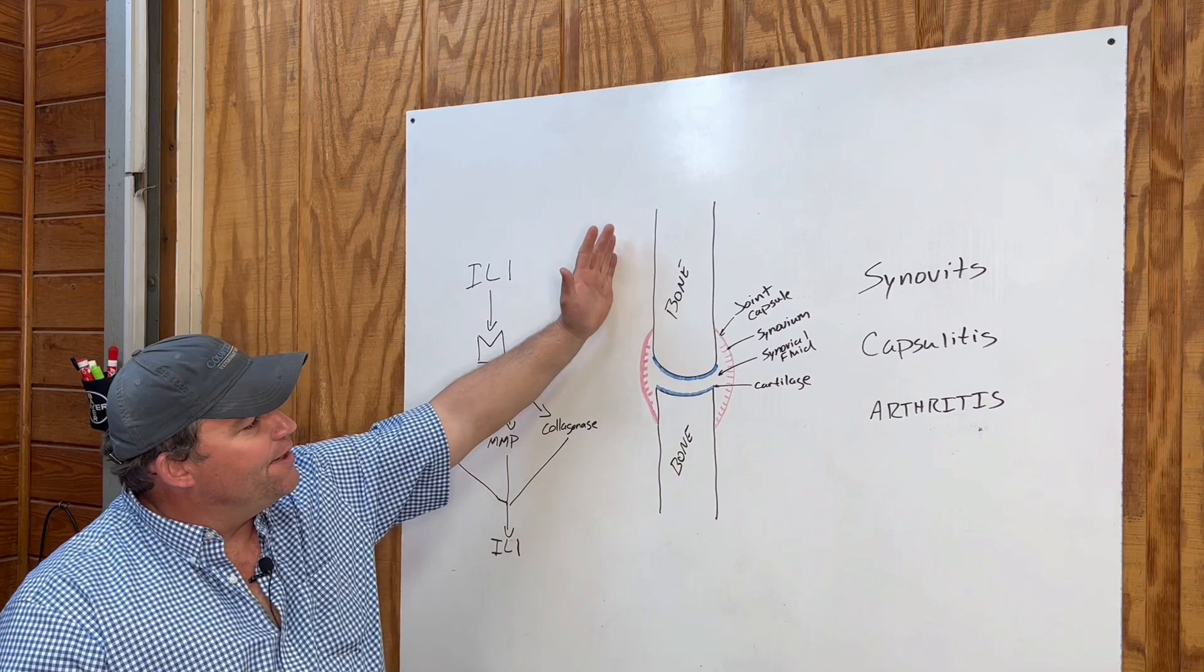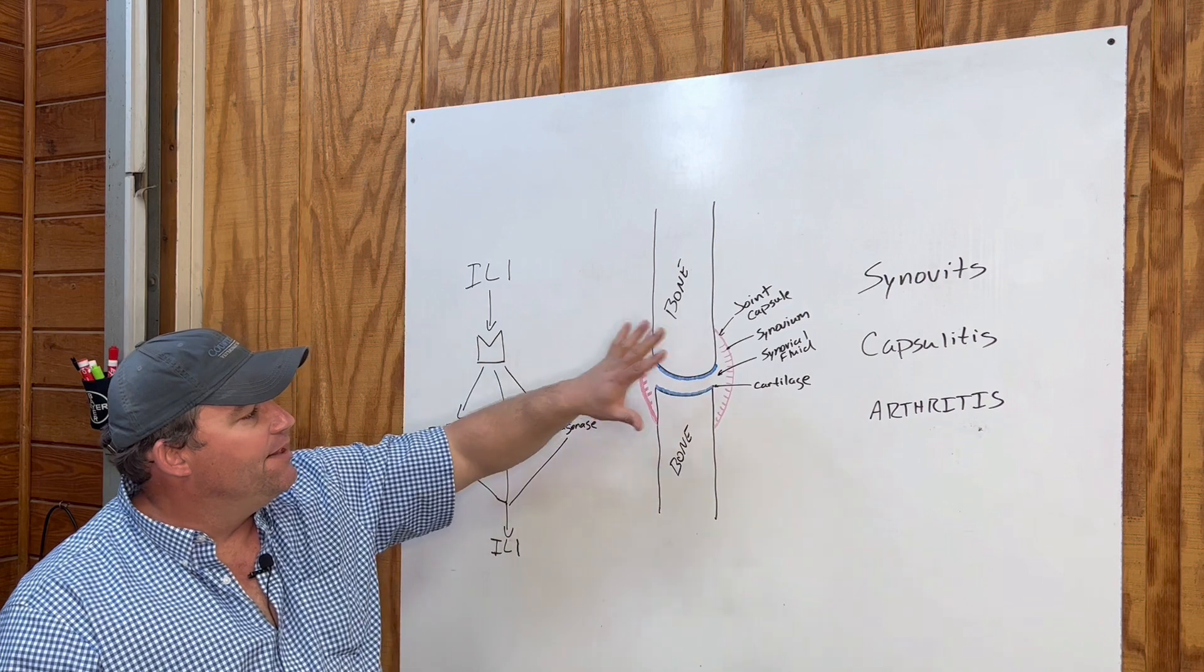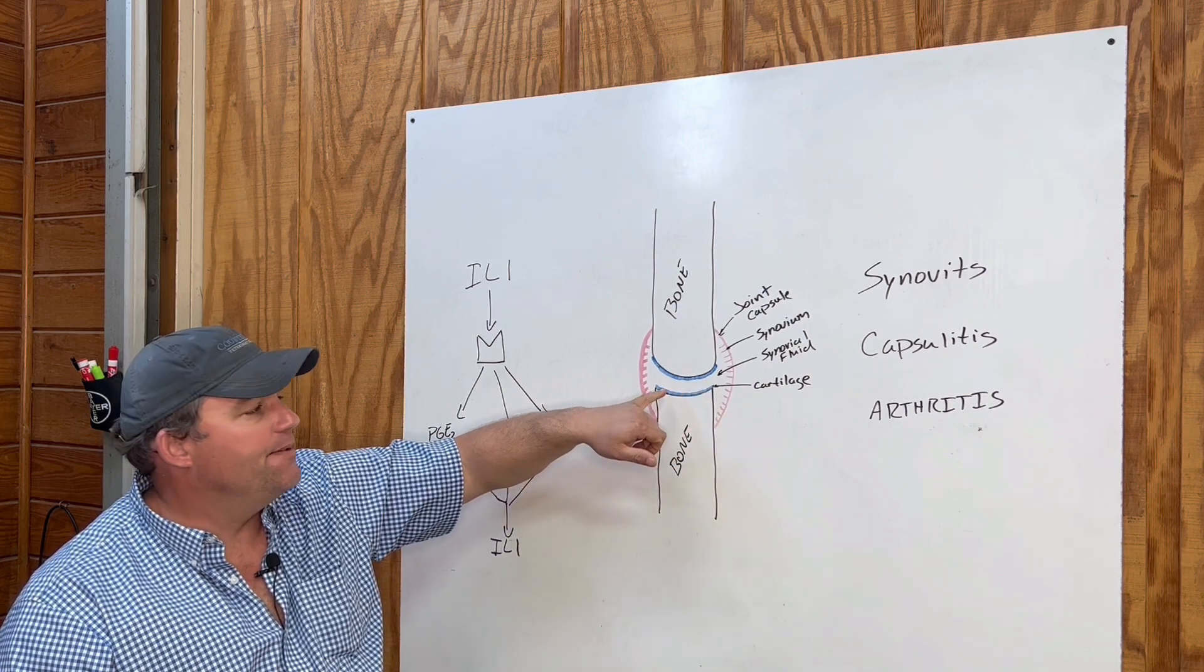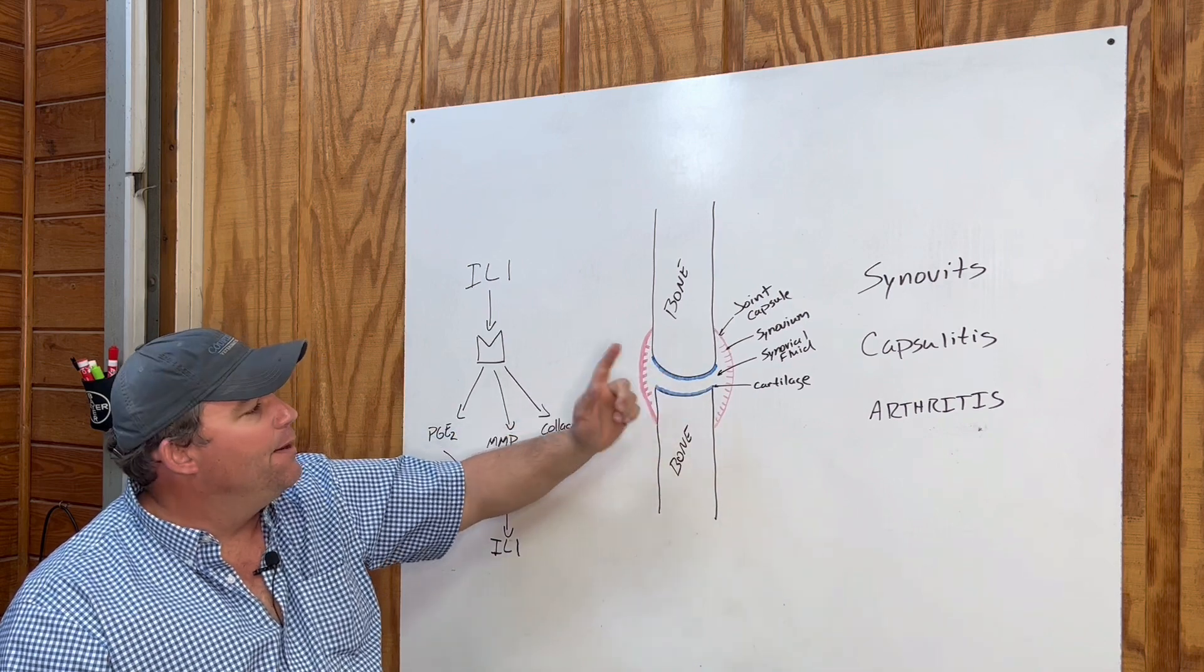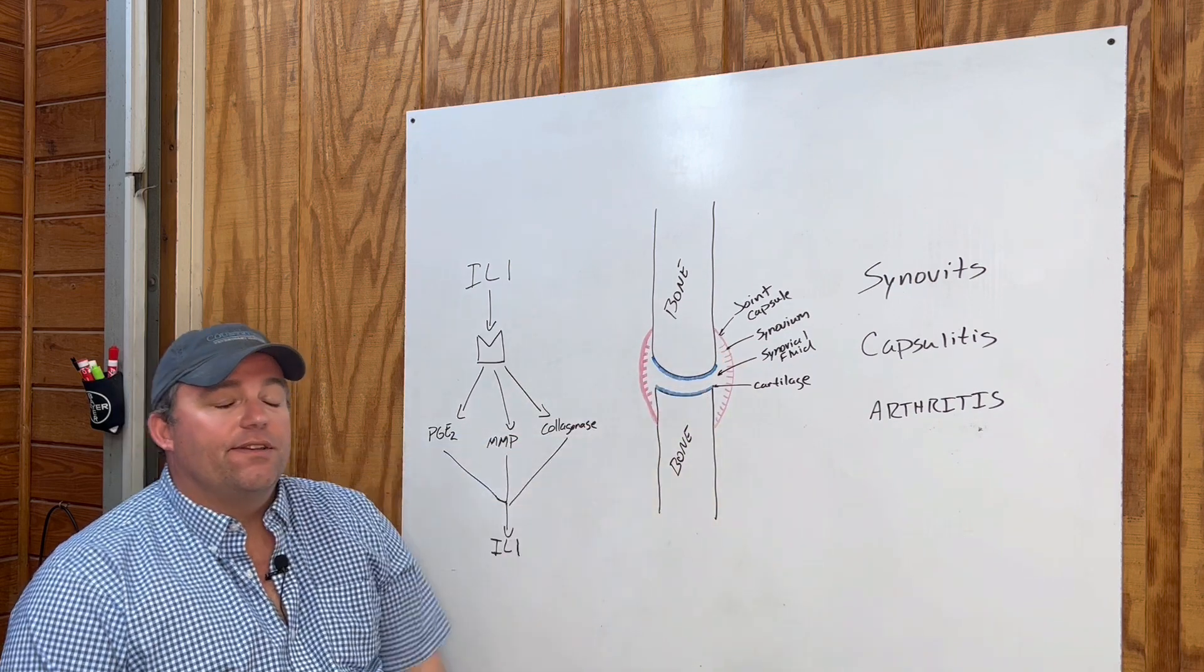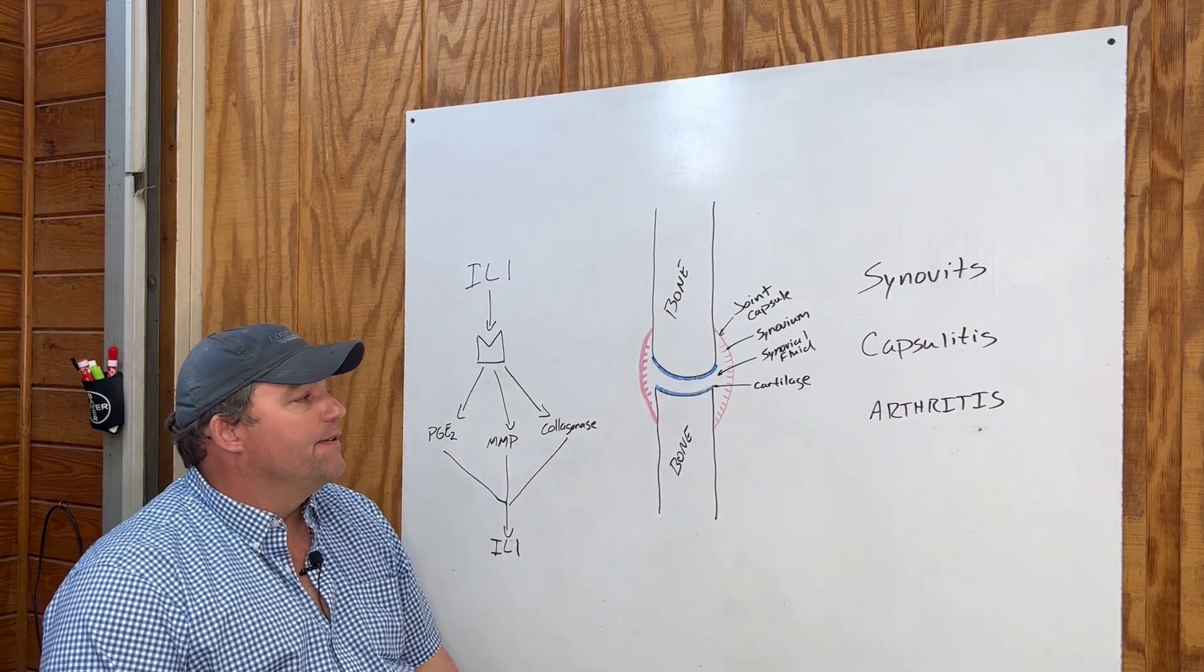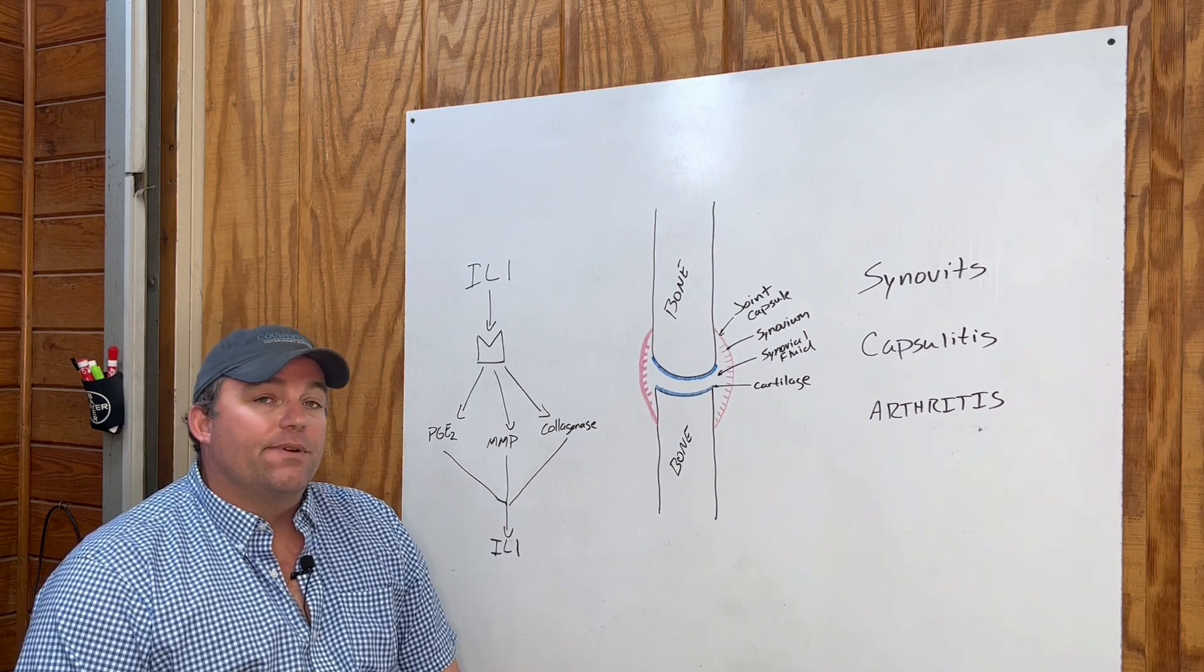This is our generic joint here. This could be any joint - fetlock, stifle, carpus, coffin joint. Where two bones come together, you have articular cartilage that provides a smooth gliding surface for each end of the bone. Within that, you have a joint capsule. The joint capsule has small hair-like cells called synovium. Synovium is responsible for producing the synovial fluid inside the joint capsule. Synovial fluid provides nourishment for the articular cartilage and lubrication for the joint.